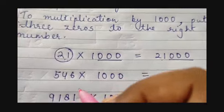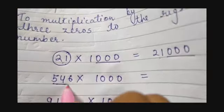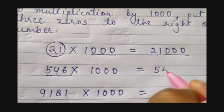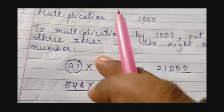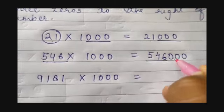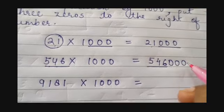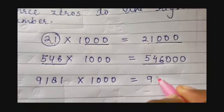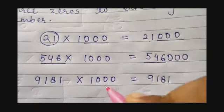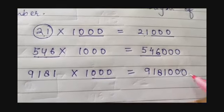Let's move on to the next example: 546 into 1000. The number is 546, so you write 546 and add 3 zeros to the right of the number — because in 1000 there are 3 zeros. Similarly, for 9181 multiplied by 1000, you add 3 zeros to the right of the number, and this will be your product.